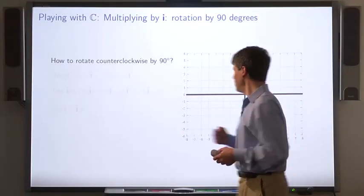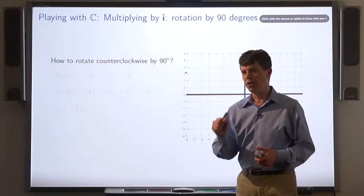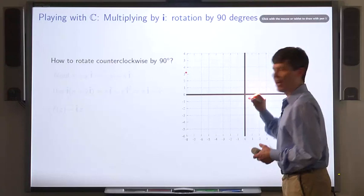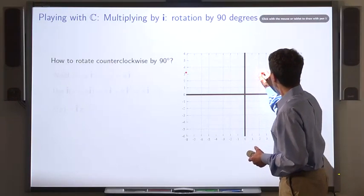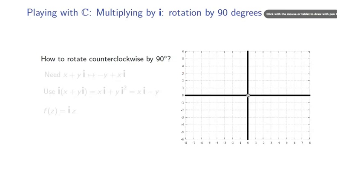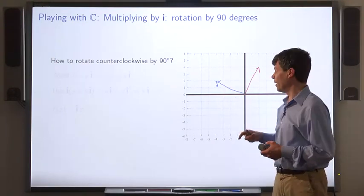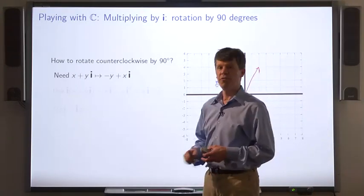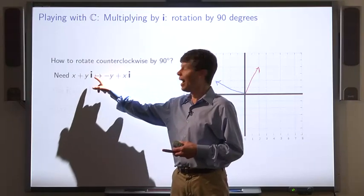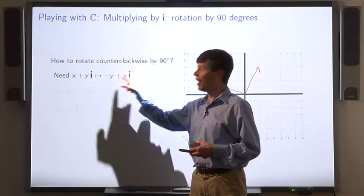How would we rotate by 90 degrees? Let's say we start with the complex number 2 plus 4i. So that's represented by the arrow that goes 1, 2, 3, 4. Rotating that 90 degrees should give us this arrow. Represented by the arrow that goes 4 units to the left and 2 units up. This is the complex number 2 plus 4i. This is the complex number minus 4 plus 2i. So we need a way of mapping from the complex number x plus yi to the complex number minus y plus xi.